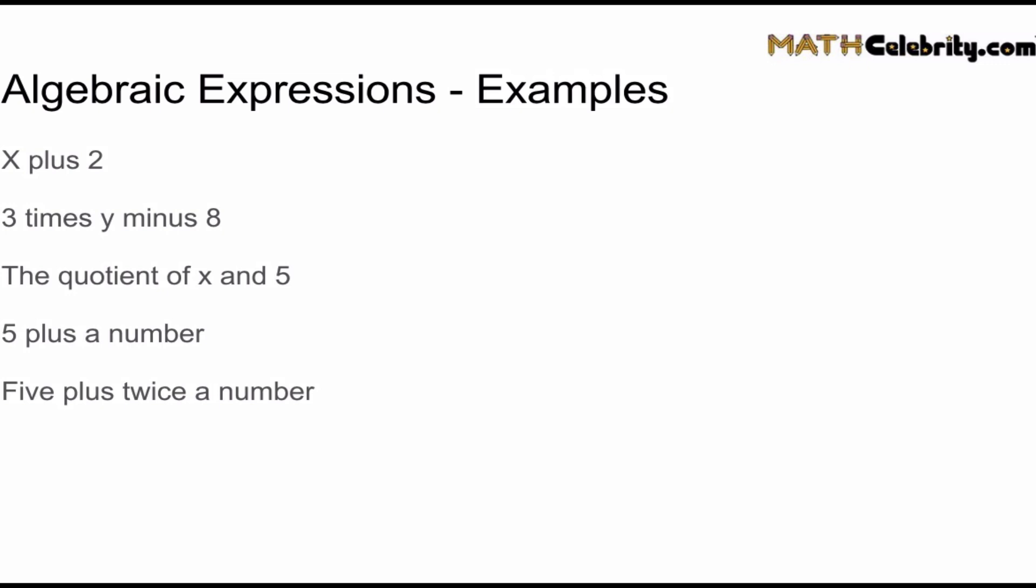Now let's look at these five algebraic expressions and take a look at what they all have in common. First, there's a variable. So in the first one it's x, second one it's y, third one it's x.